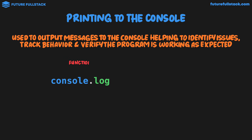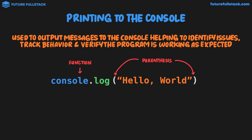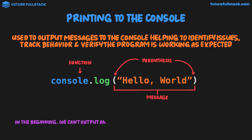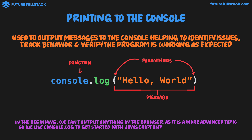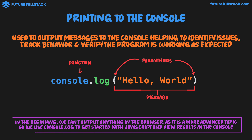We're going to be talking about functions in a lot more detail later on in the JavaScript full course. After console.log, we add a set of parentheses, and inside our parentheses we add some text in quotation marks with the message 'hello world'. The quotation marks can either be single or double. As you start your JavaScript journey, in the beginning we can't output anything in the browser as it is a more advanced topic, so we use console.log to get started with JavaScript and view results in the console.